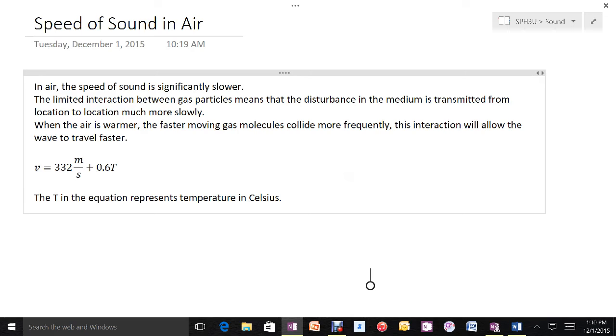The actual equation that relates the speed of sound to the temperature of the air is given here: v = 332 m/s + 0.6T. That temperature, the way this equation is designed, is for that temperature to be in Celsius, so don't worry if you have a negative temperature. You can still just put it into the equation, and it'll work out just fine.